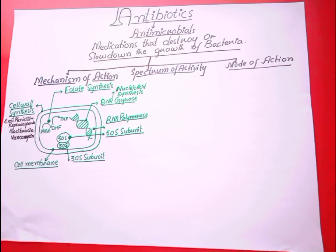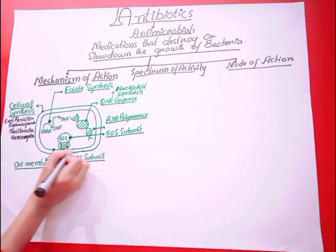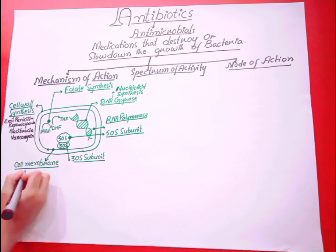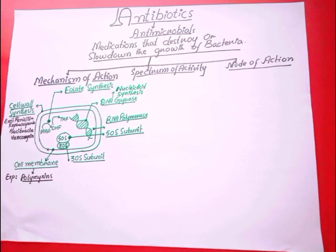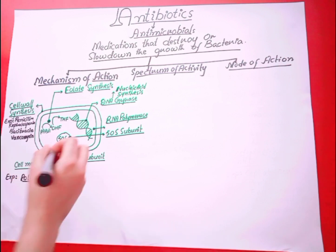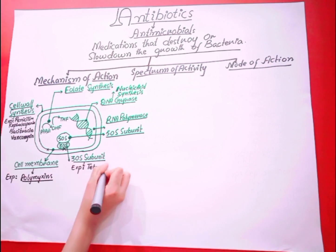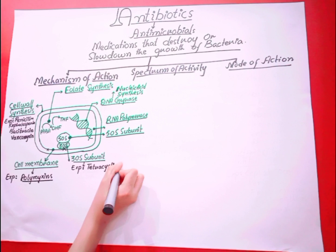Some antibiotics work by inhibiting the inner wall — the cell membrane — of the bacterial cell. The example is polymyxins. Some agents work by inhibiting protein synthesis; those that inhibit the 30S subunit of ribosomes include tetracyclines and aminoglycosides.